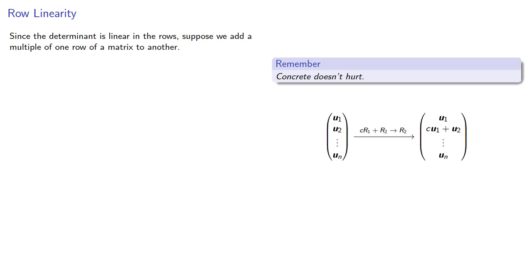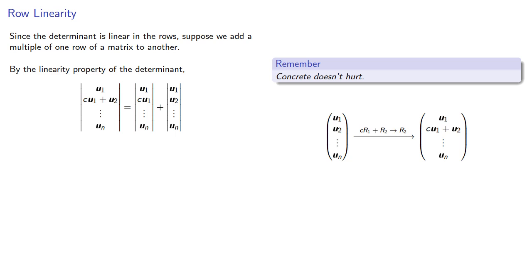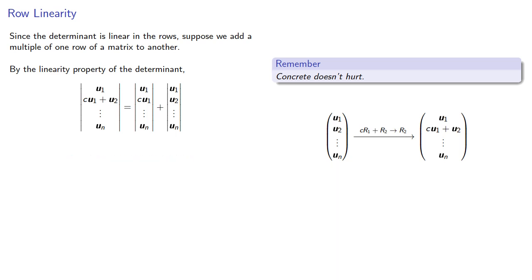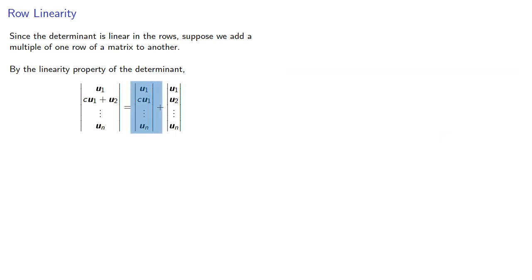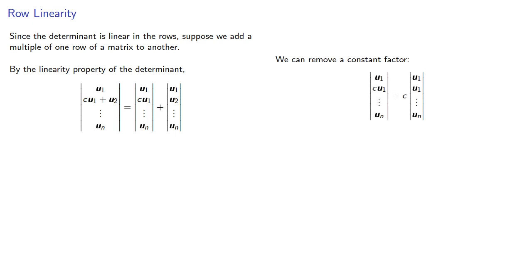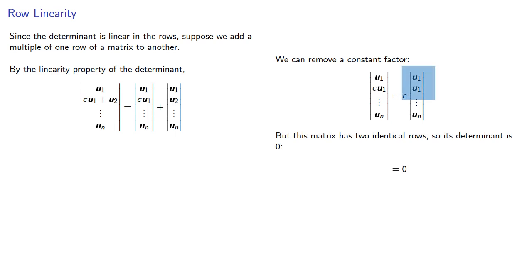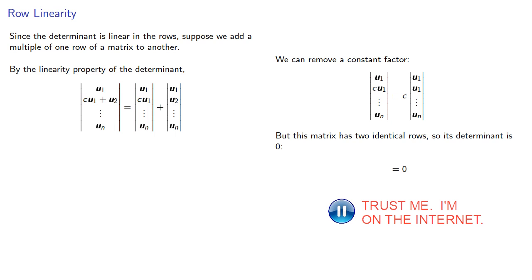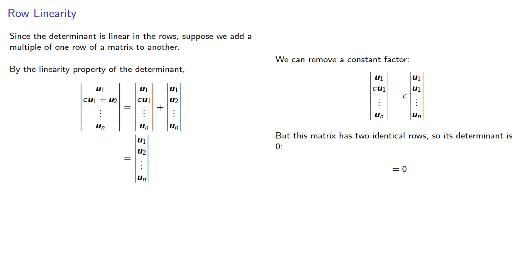By the linearity property of the determinant, the determinant of this new matrix is the sum of the determinants of two other matrices. In the first matrix, we have one row multiplied by a constant, so we can remove that constant factor. But that matrix then has two identical rows, so its determinant is zero. This means that the matrix produced by adding a multiple of one row to another has the same determinant as the original matrix.